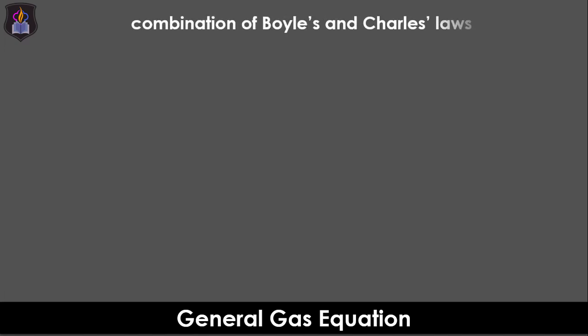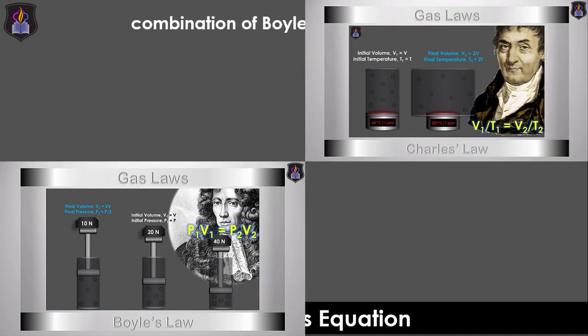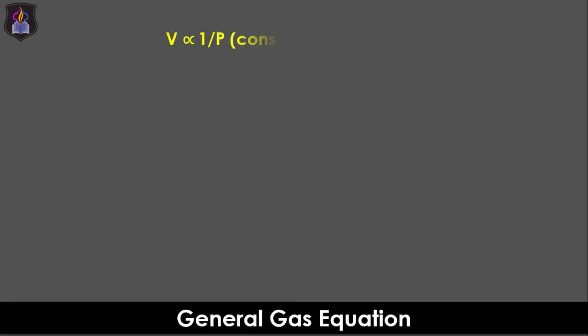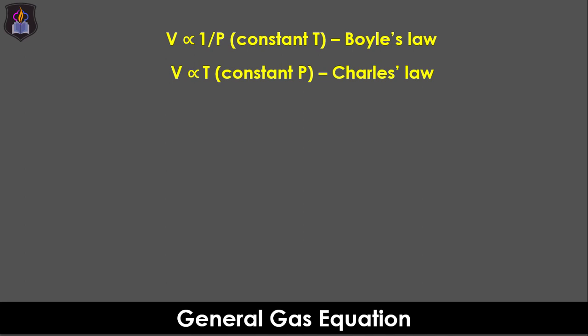The general gas equation is a combination of Boyle's and Charles's law. If you'd like to learn more about these laws, check the link in the description. According to Boyle's law, V is inversely proportional to P at constant T, and Charles's law states that V is directly proportional to T at constant P. If we combine both laws, we obtain a joint variation between V, T, and P.